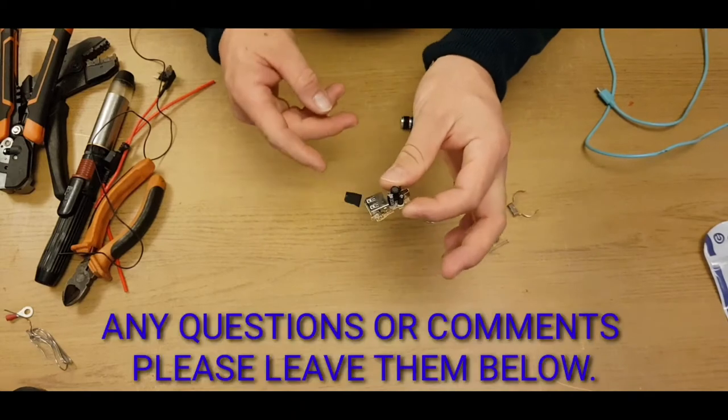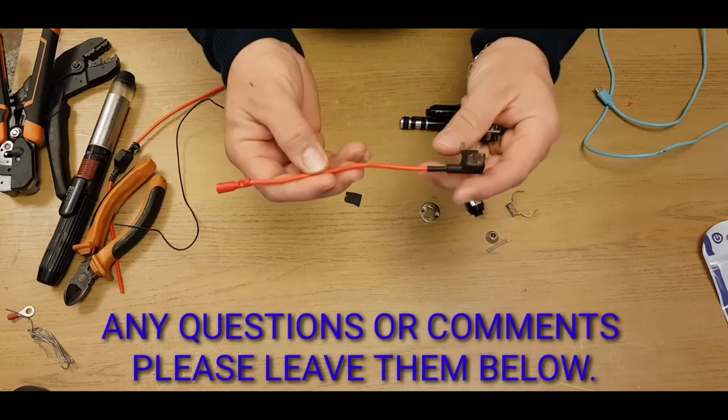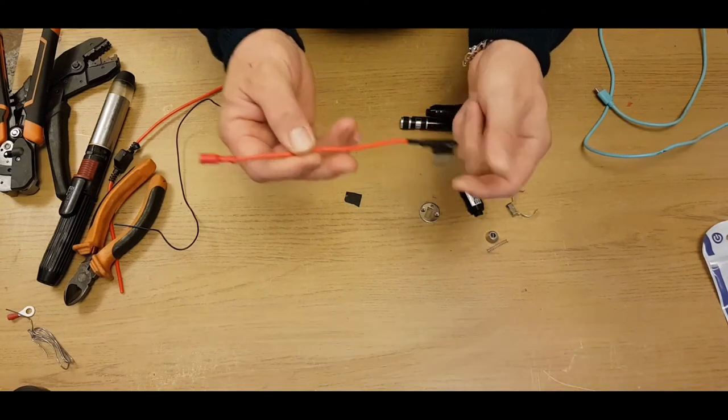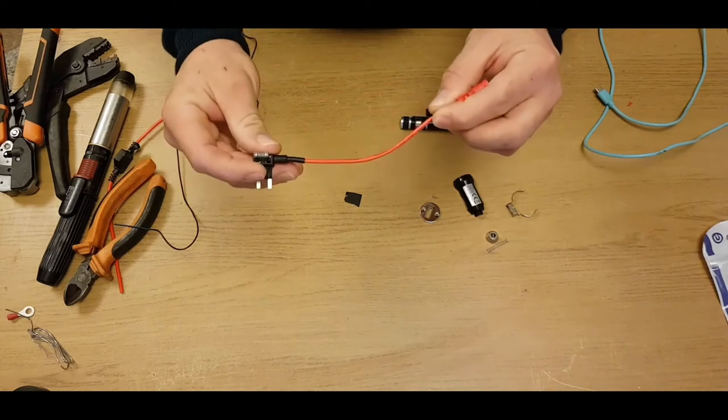So what we're going to need for this is you will either need a fuse tap, and what we'll do with the fuse tap is we'll just directly wire this on and then you can tap this straight into your fuse box.